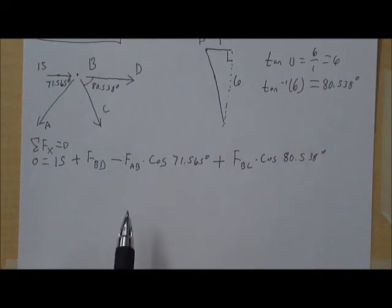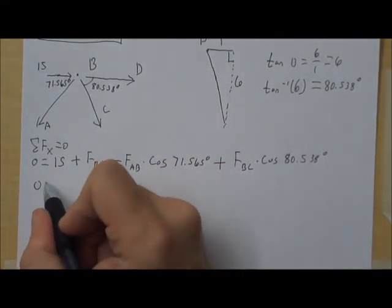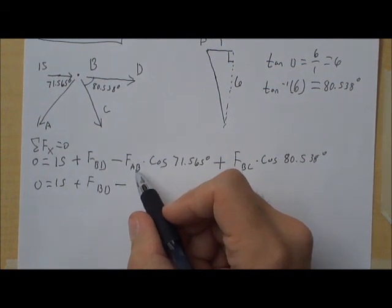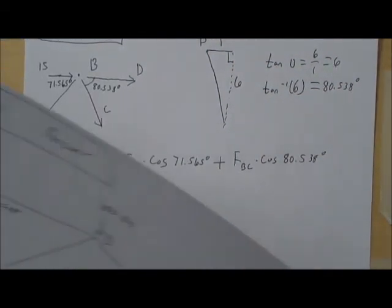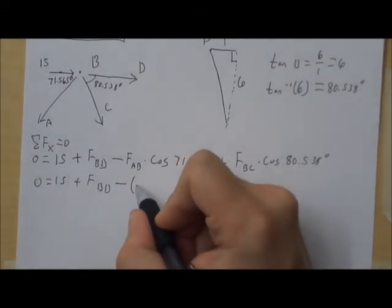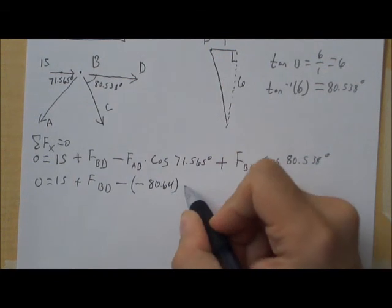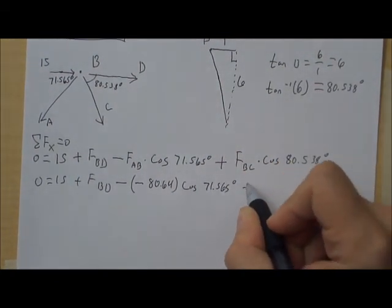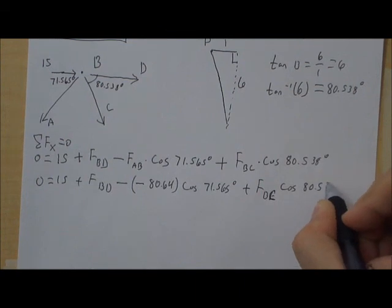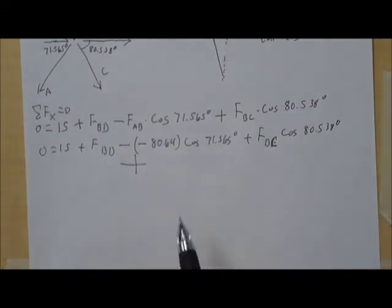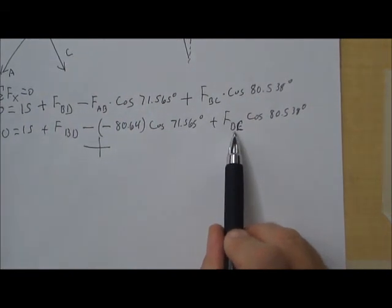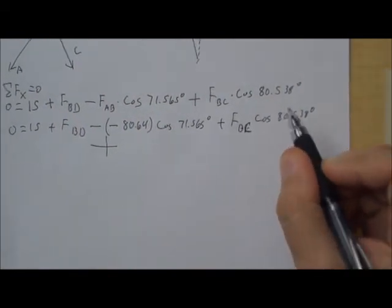So we're definitely going to need to come back to this one because there are things that we don't know. We do know the force of AB. So we can fill that in. 0 equals 15 plus force BD. We don't know yet. Minus. Let me look at my final answer sheet here. Force of AB. 80.64 compression. That means it's negative. So negative 80.64 times cosine 71.565 degrees. And I'll copy the rest here. So that's actually going to end up to be plus right there. Alright. But I still have more than one unknown. FBD and also FBC, excuse me. Those are both unknown. So I'm going to have to go and do the Y.